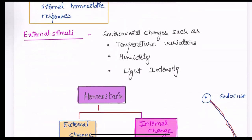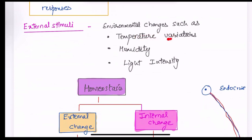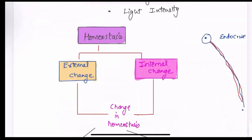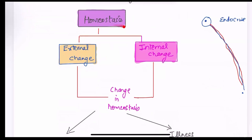External stimuli include temperature changes, like if you move to a very high temperature or a very cold temperature, humidity and light intensity. The main aim of homeostasis is to manage the balance between external change and internal change.